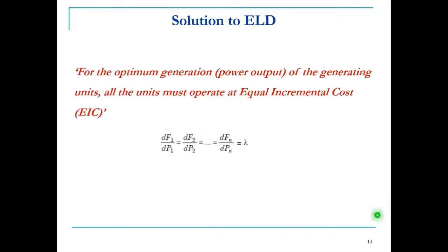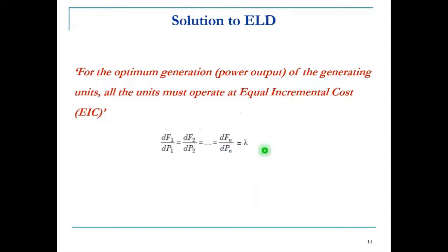In summary, for optimum generation, all generating units must operate at equal incremental cost: dF1/dP1 = dF2/dP2 = ... = dFn/dPn = λ. This is the equal incremental cost (EIC) criterion.